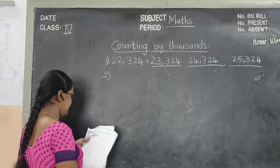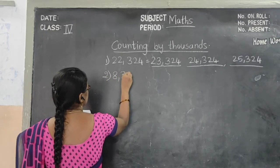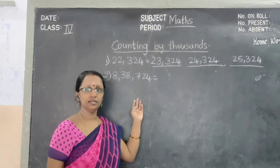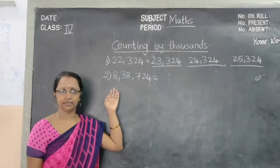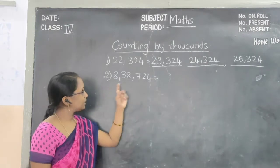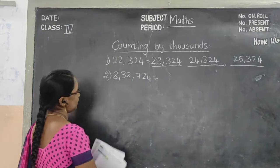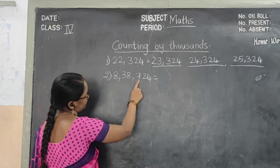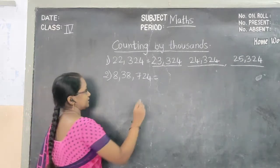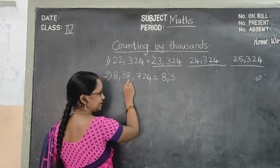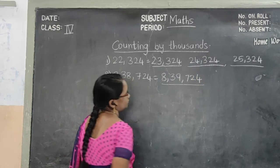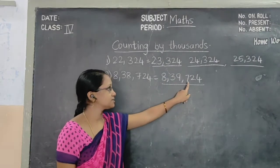Next one — the second question. What is the second one? 8,38,724. Here also they have given the same type. But what question have they told? 1000's only. That means the 1000's place only we have to change; the rest will be the same. So in the 1000's place, what number is there? 1's, 10's, 100's, 1000's — so the number is 8. For this only we are going to add plus 1. So 38 becomes 39 — that gives us 8,39,724.